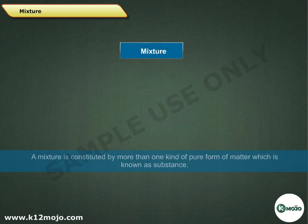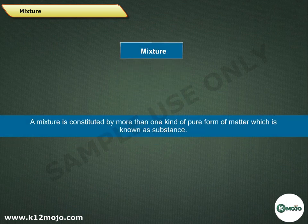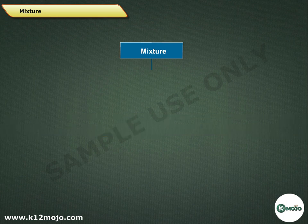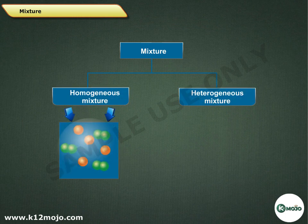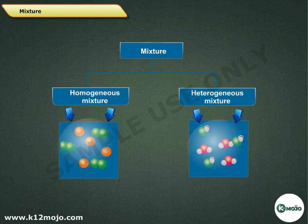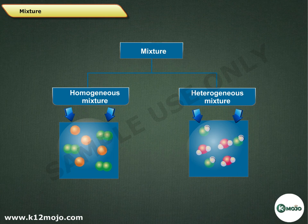Mixture. A mixture is constituted by more than one kind of pure form of matter, which is known as a substance. Mixtures can be divided into two parts: homogeneous mixture and heterogeneous mixture.